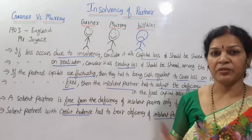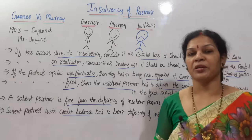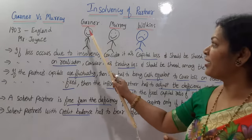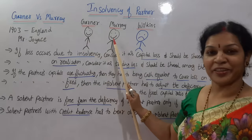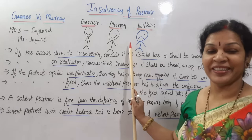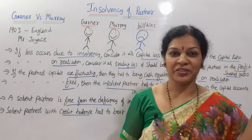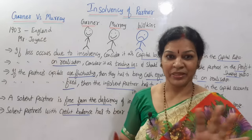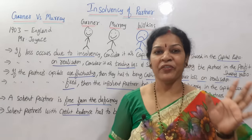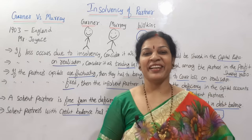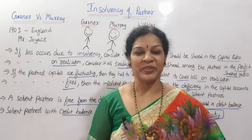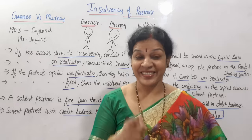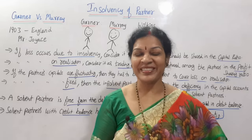These are the main important points given by judge Mr. Joyce about the Garner versus Murray case. Please take a screenshot or note these down. You may have noticed the figures - Garner and Murray have smiling faces, and Wilkins who is insolvent has a crying face - an easy way to remember. 1903, England, the Garner versus Murray case. In the coming classes we'll work out insolvency problems so you'll get more idea. Stay connected, don't forget to share these videos, stay blessed, and have a wonderful career. Good luck.